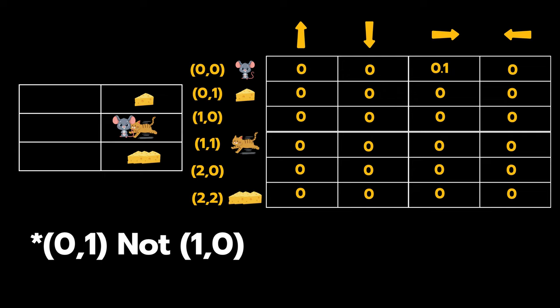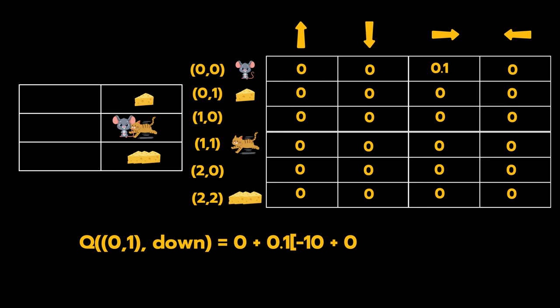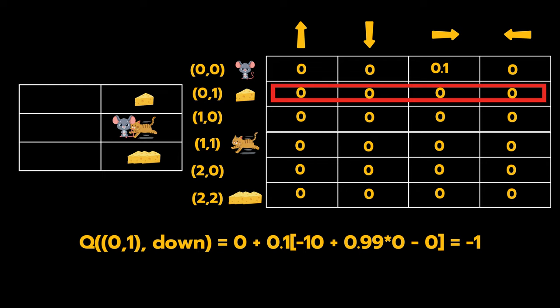So we use our formula again. So Q value of (1,0) with down action equals 0, which is the former estimate of the Q value for this state, plus 0.1 the learning rate, into the immediate reward, which is -10 in this case, plus our gamma, which is the discount factor 0.99, into—now here also we know that the max of the Q value for any optimal action currently is 0 because the table was initialized with zeros, minus our former estimate, which was again 0.